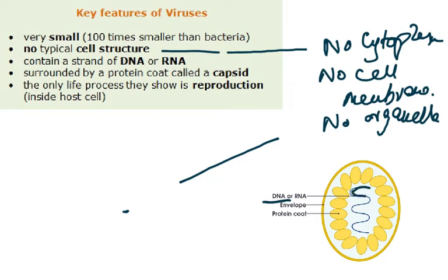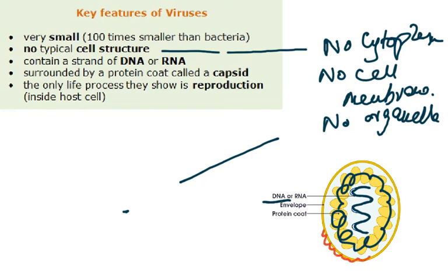The DNA or RNA is shown as a strand — not a loop, but a strand. Then there is the protein coat, shown here in yellow, all around it. At times there is another envelope on the outside made up of lipids — specifically a phospholipid envelope on the outside made up of fats.